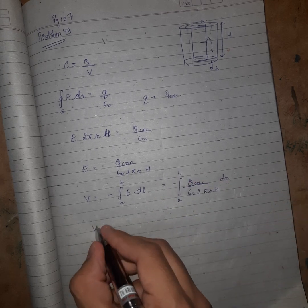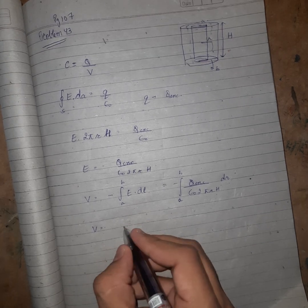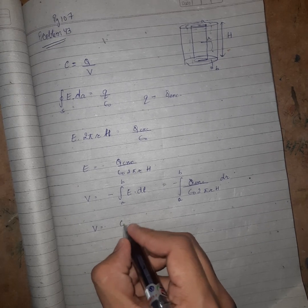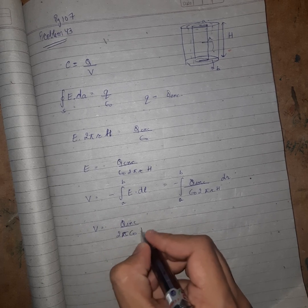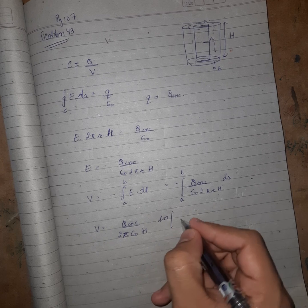Negative. So V comes out to be Q enclosed upon 2πε₀ into h and ln from limits from a to b.